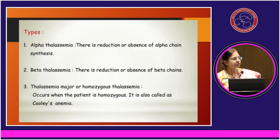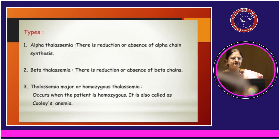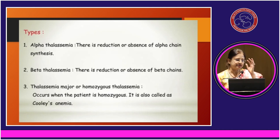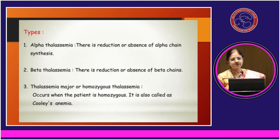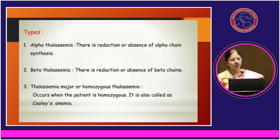There are two types of thalassemias: alpha thalassemia and beta thalassemia. Alpha thalassemia occurs when there is reduction or absence of alpha chains, and beta thalassemia when there is reduction or absence of the beta chains of hemoglobin.